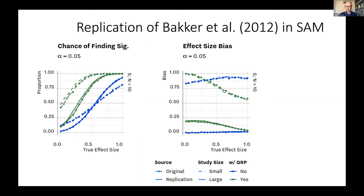This is two effect sizes — a standardized mean difference going from zero to one. The dashed lines represent the strategy of small studies — instead of one study of 100 participants, you run five of 20. The mere chance of significant results is much higher than it is for one single study under the null. What you see on the left-hand side is that the dotted lines do much better up until around 0.50 effect size. It's a winning strategy, particularly when you p-hack using the tricks as simulated here.